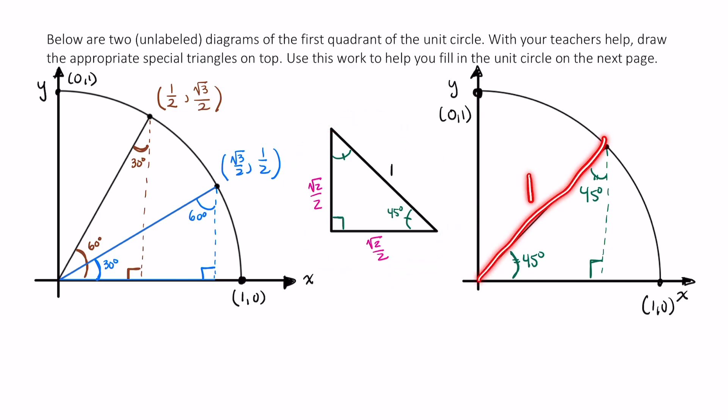This hypotenuse is certainly 1. That tells me that each leg here is square root of 2 over 2. So the x-coordinate is root 2 over 2, and the y-coordinate is root 2 over 2.